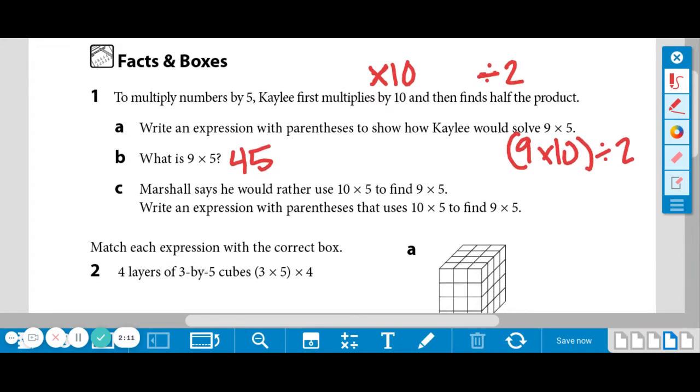The next question says Marshall says he would rather use 10 times 5 to find 9 times 5. Write an expression with parentheses that uses 10 times 5 to find 9 times 5.